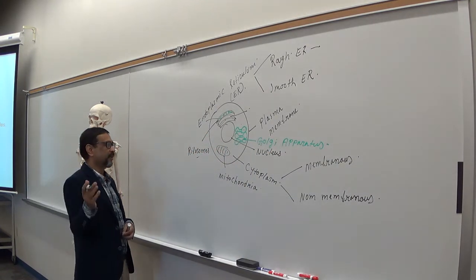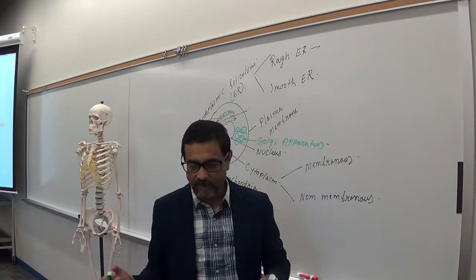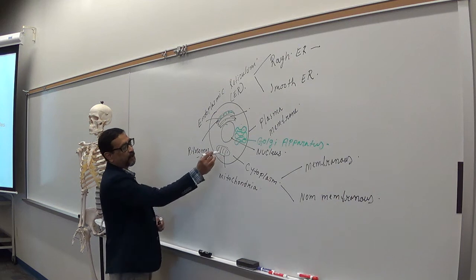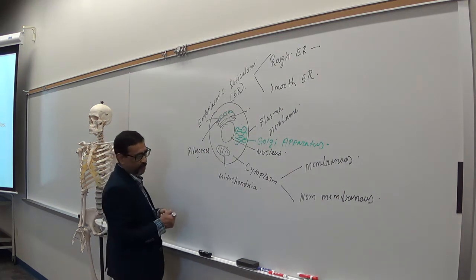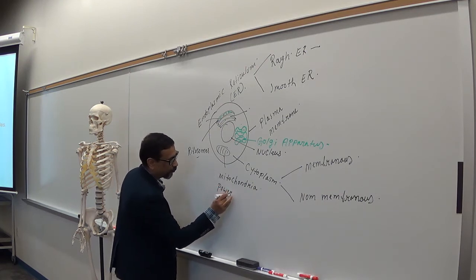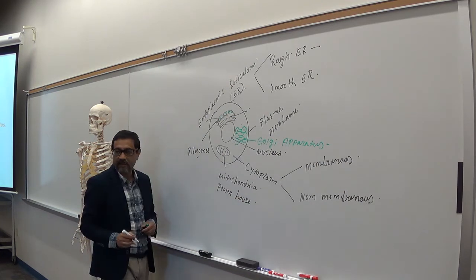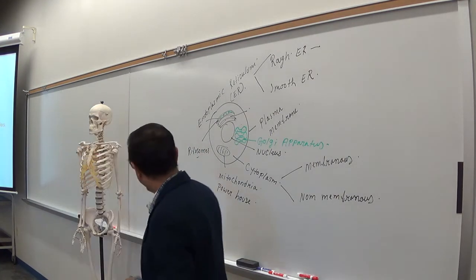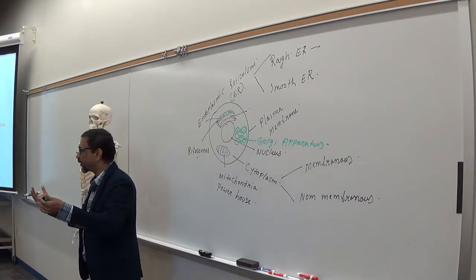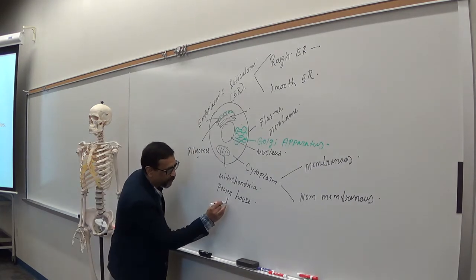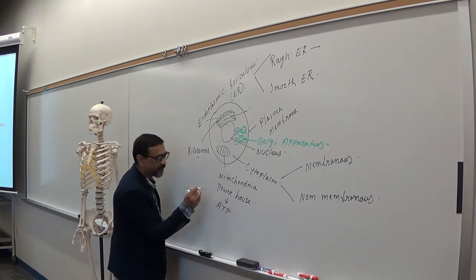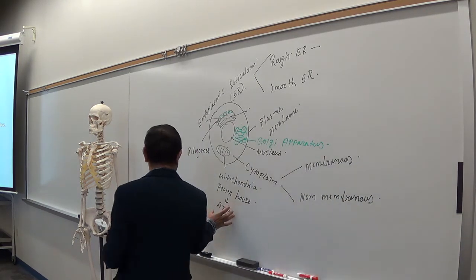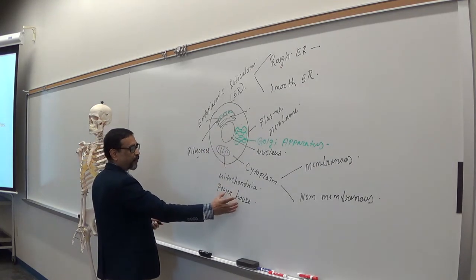You also have other structures like centrioles, centrosomes, microtubules, and microfilaments. Mitochondria is called the powerhouse of the cell because most of the cellular metabolism occurs inside the mitochondria. Metabolism produces ATP, so most of the ATPs come from mitochondria. That's why it is called the powerhouse.